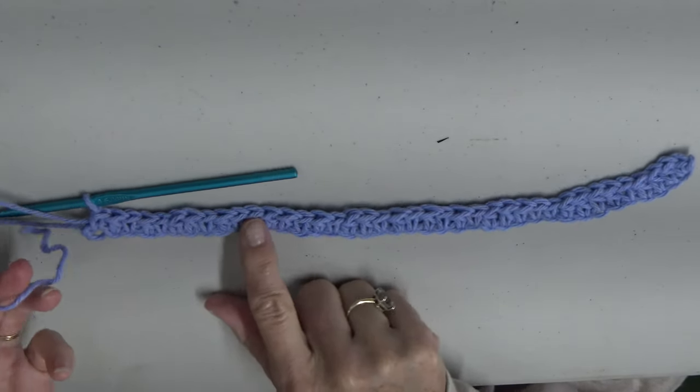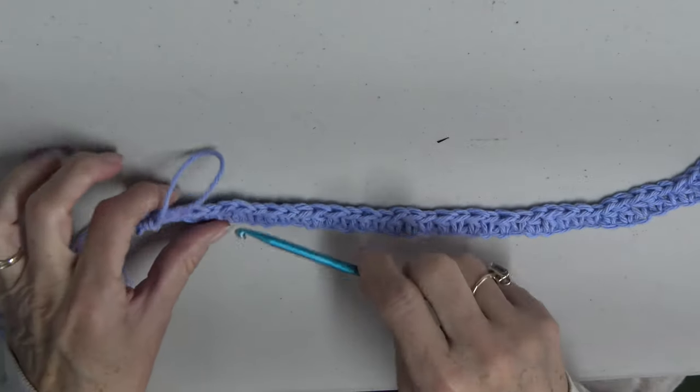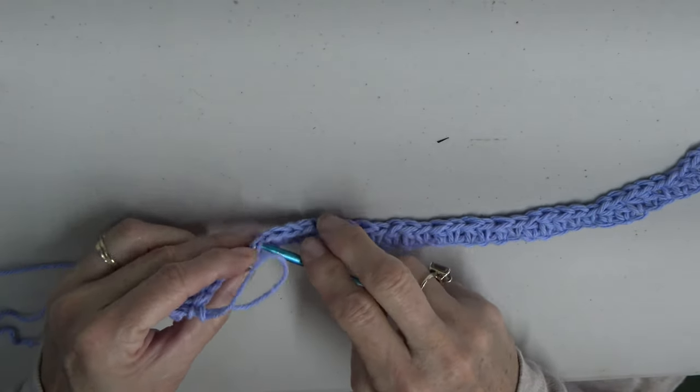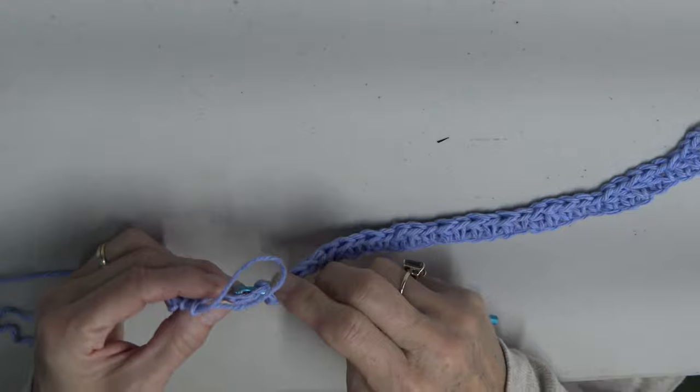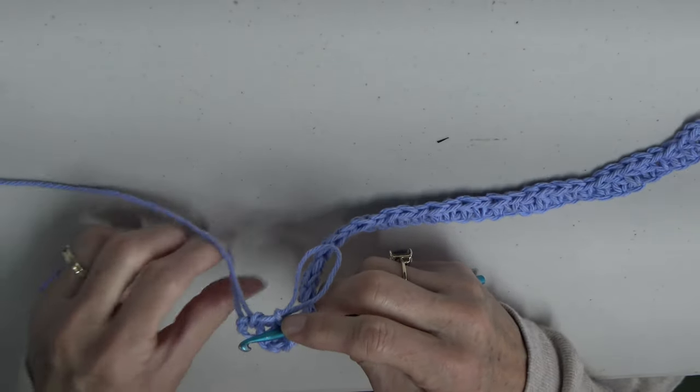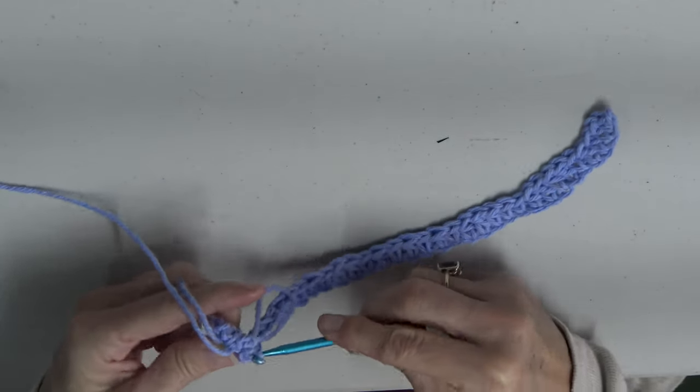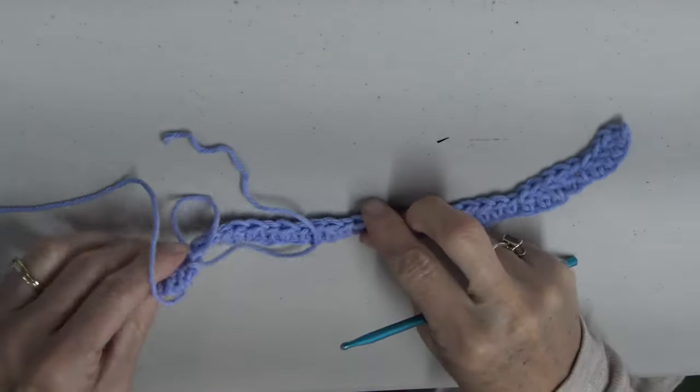So before you start your second row, we want to feed back in your tail into the top of the row you just finished. So you just take your tail, take your hook, and just feed it through the top stitches of that row. And that way you're just hiding your tail so that when you go on to your second row it is hidden.